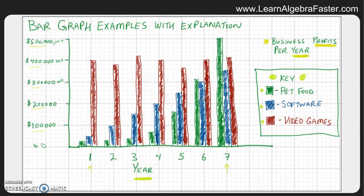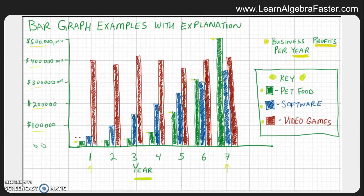Starting with pet food: in years one, two, and three it barely has any profits, though it is going up just a little bit. In year four you see quite a bit of difference, year five even more, year six shows a lot of growth, and year seven it has made more money than any other business in the whole chart. You can see a trend starting low and going up high.